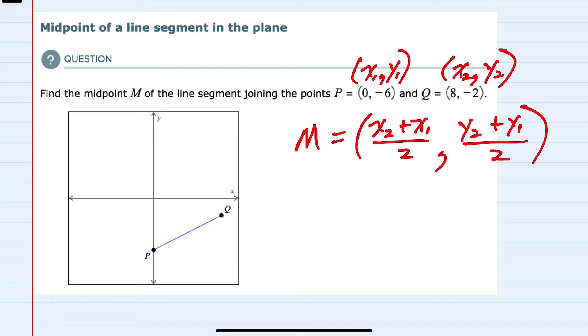So using this formula, the midpoint will be: I start with X2, which here is 8, plus X1, which is 0, over 2. Then I need Y2, which is negative 2, plus Y1, which is minus 6, over 2.